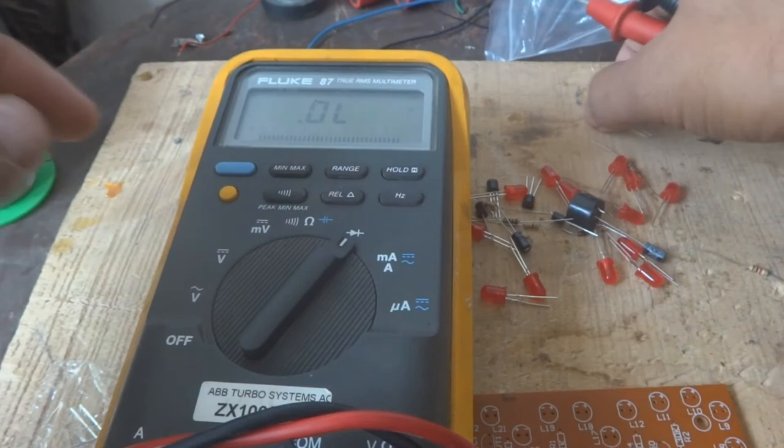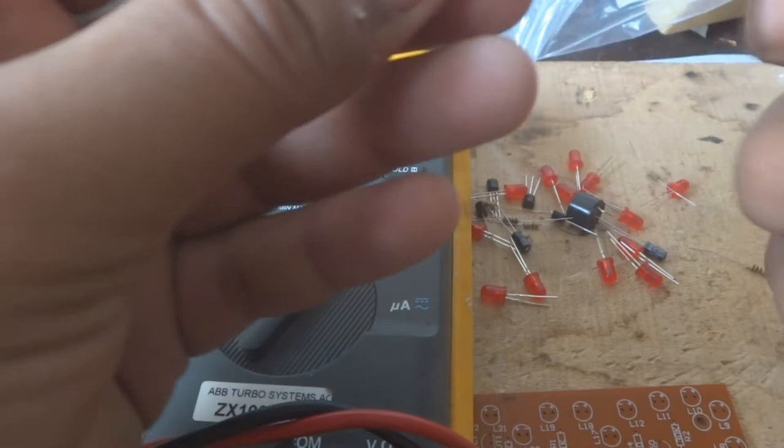Put the multimeter on the diode range. We'll check this LED by connecting the bigger lead to the meter red and the shorter lead to the meter black, and see if the LED switches on.